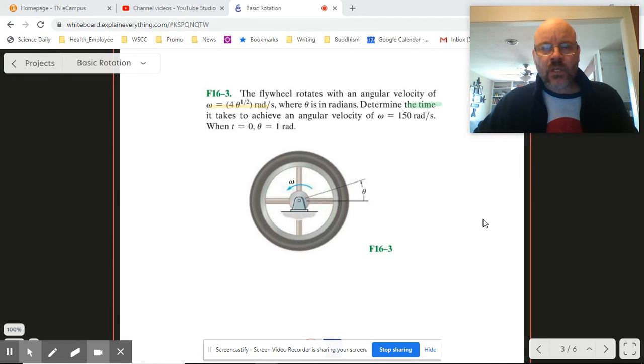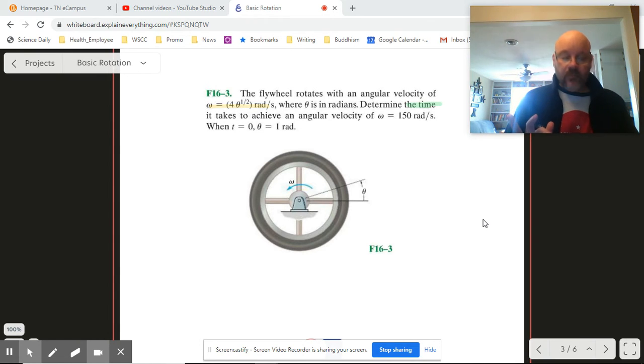Hmm, do you see what they've done to us? This was not very nice. So they give us omega as a function of theta. So we get omega as a function of theta, but in order to find a time, we're going to need omega as a function of time.